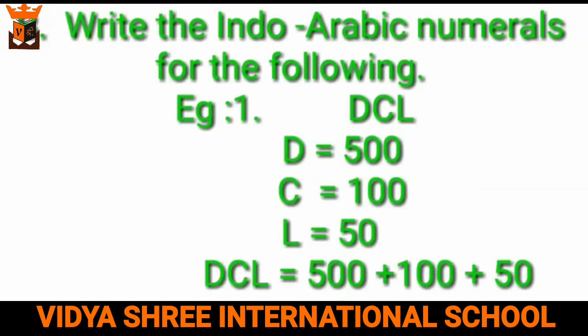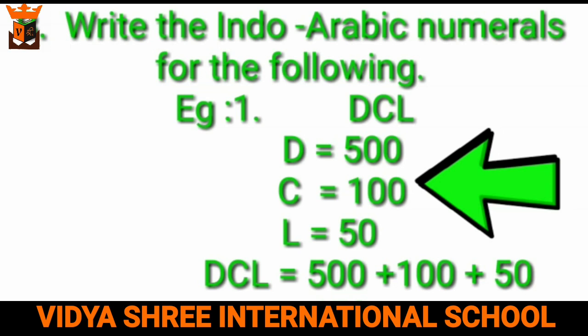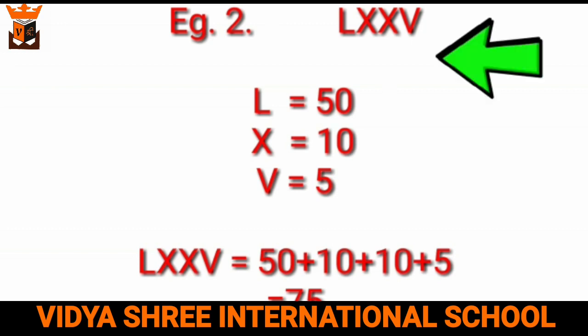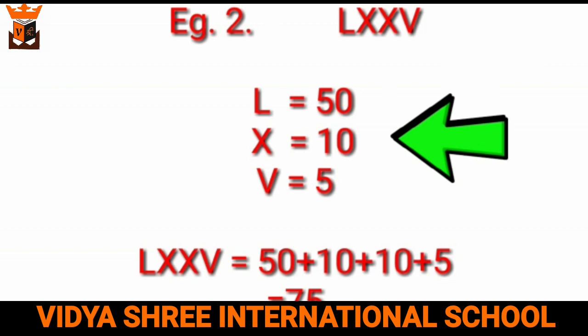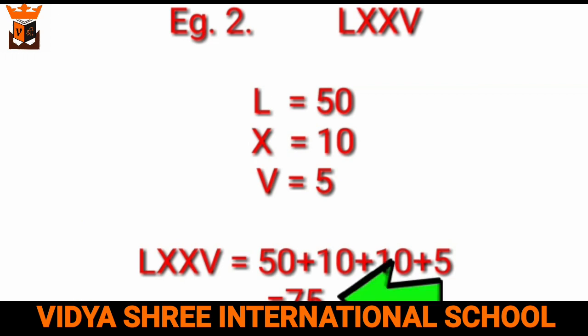The second question in your book is: write the Indo-Arabic numerals for the following. First: DCL — for D we have 500, for C it is 100, and for L it is 50. So adding 500 plus 100 plus 50, we get 650. Second: LXXV — for L we have 50, for X it is 10, and for V it is 5. So LXXV means 50 plus 10 plus 10 plus 5, which equals 75.